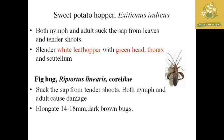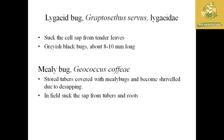The next pest is the fig bug, with scientific name Ruptortus linearis, which comes under the family Coreidae. Both nymph and adult cause damage by sucking sap from the plant. It has an elongated, 14 to 18 mm long, dark brown bug body.